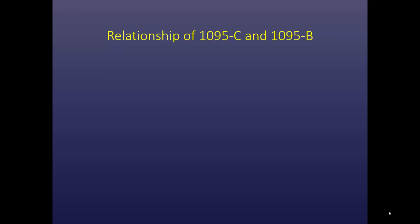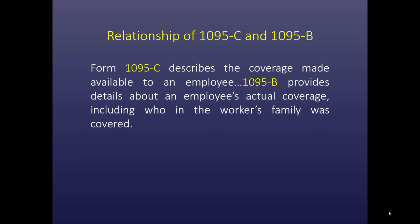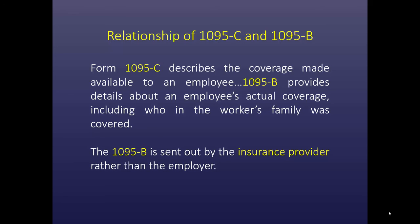What is the relationship between the 1095-C and the 1095-B? The 1095-C describes the coverage that's made available to an employee — this comes from the employer. The 1095-B comes from the health care provider and provides details about an employee's actual coverage, including who in the worker's family was covered. The 1095-B is sent out by the insurance provider rather than the employer.